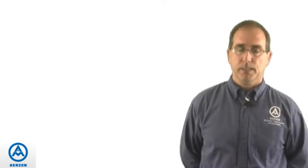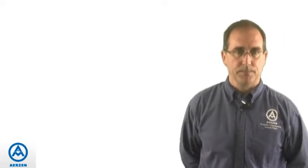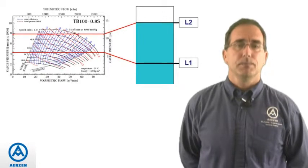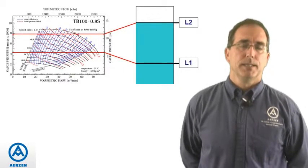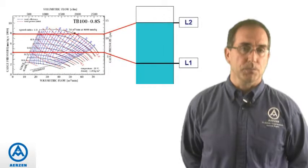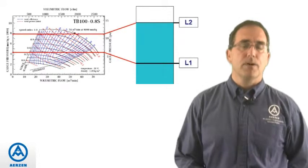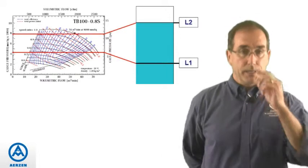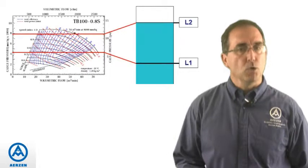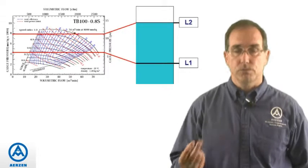Putting aside the economics for a second, let's look at some system characteristics that would also help determine the best technology. One of those characteristics is pressure variation. Either of the two PD technologies would be appropriate for a system with major pressure fluctuations, because all you really need is enough motor horsepower to overcome the higher pressure — L2 in this diagram. However, if you were using a turbo technology, you would have to make sure that both the high level and the low level reside on the performance map, otherwise you would run into trouble.